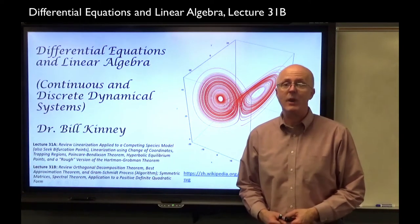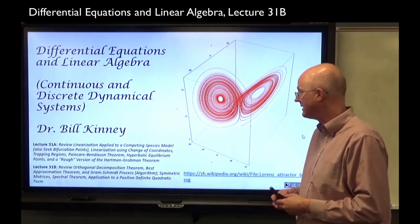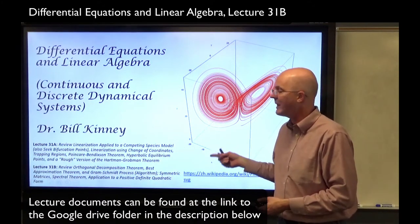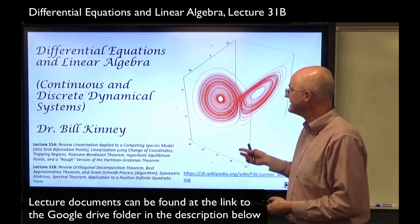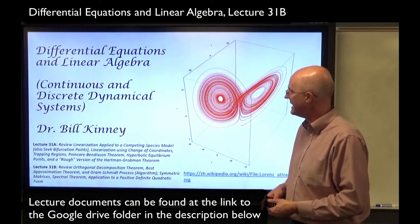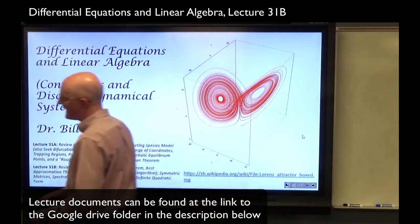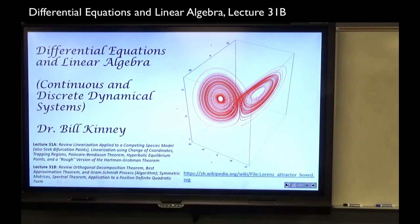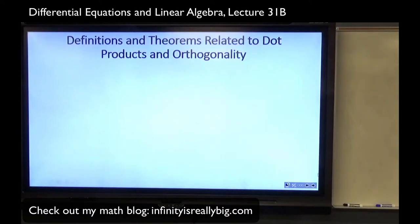Lecture 31b of Differential Equations in Linear Algebra covers some pretty high-level theorems in linear algebra. We'll start by quickly reviewing the Orthogonal Decomposition Theorem, Best Approximation Theorem, and Gram-Schmidt Process from Lecture 30b. New topics include symmetric matrices, the spectral theorem, and an application to what's called a Positive Definite Quadratic Form. We want to be satisfied with applying these ideas to examples, which is understandable though you do need to work at it.